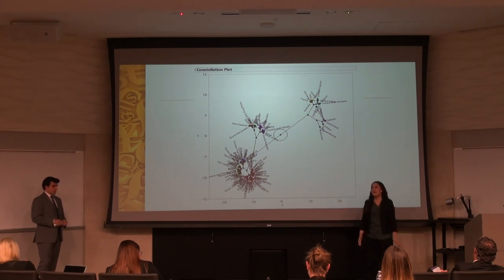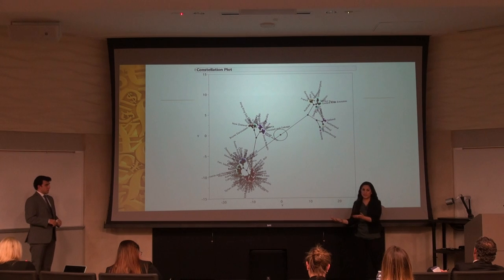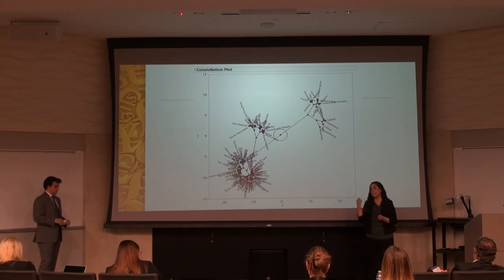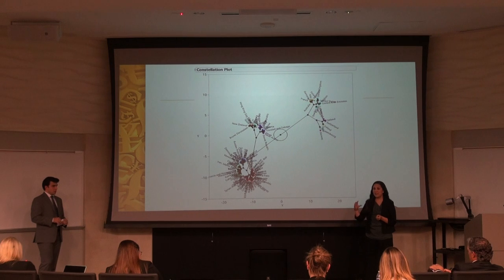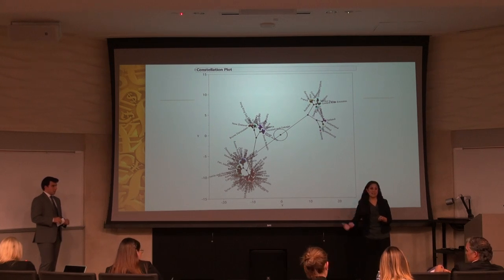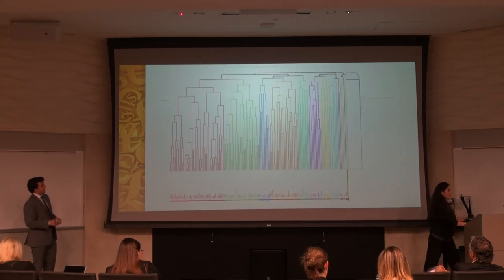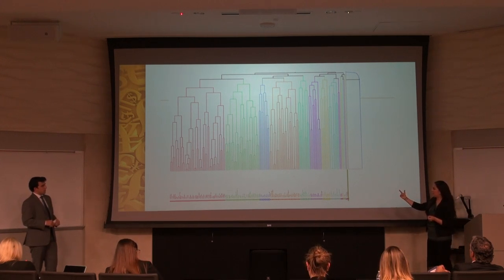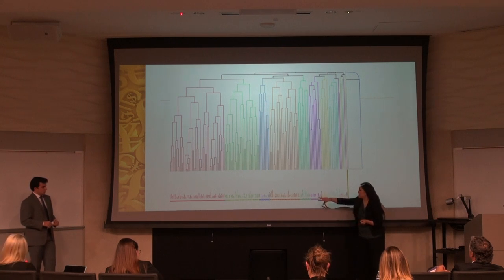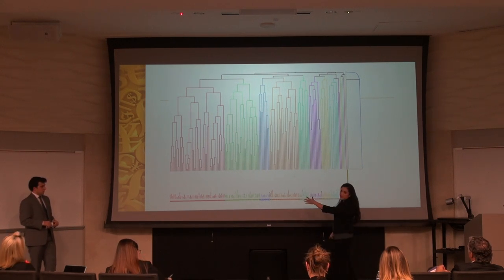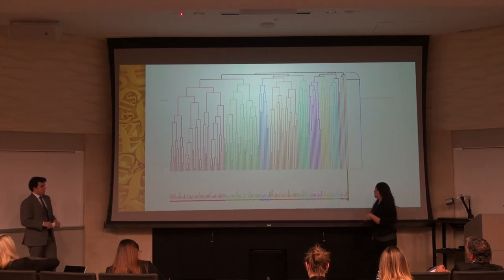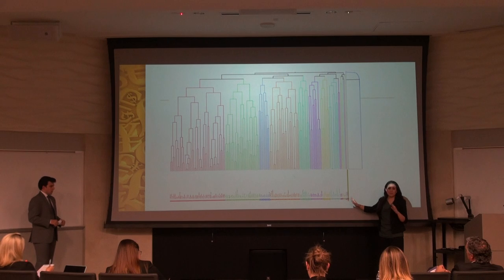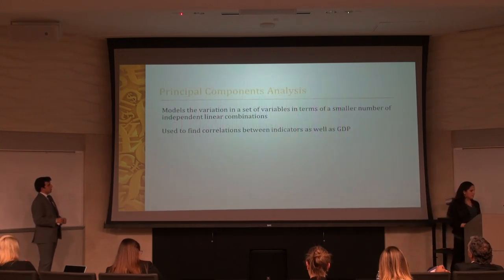This clustering really helped us apply the results to the principal components analysis, so we could compare and see what factors had the most impact on economic growth. Here is another visualization of the clustering by color. The highest GDP per capita country in this 2006 model was Luxembourg.